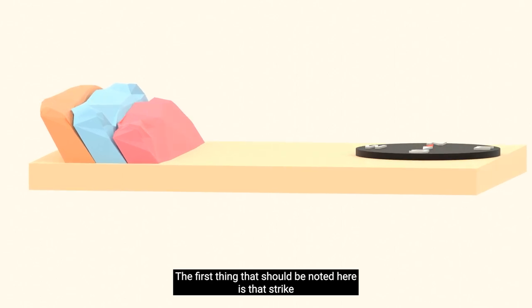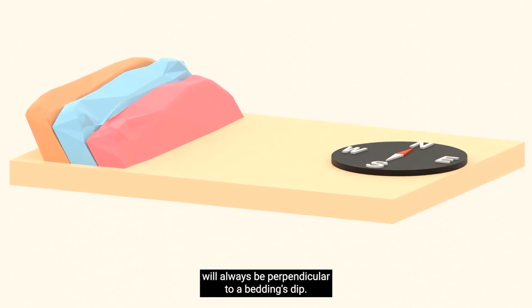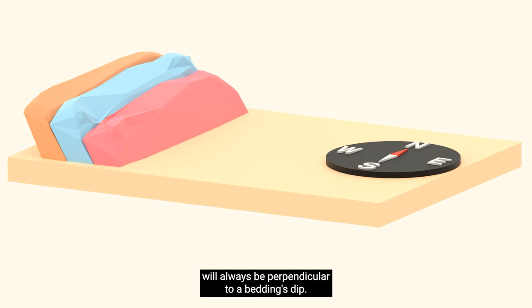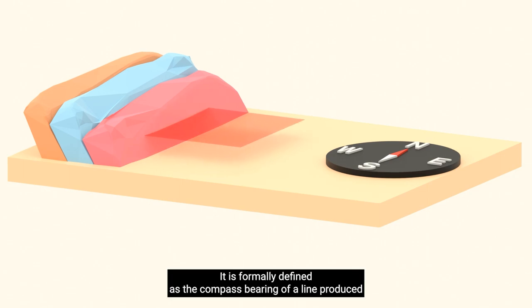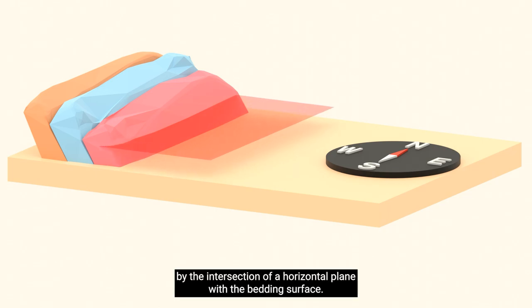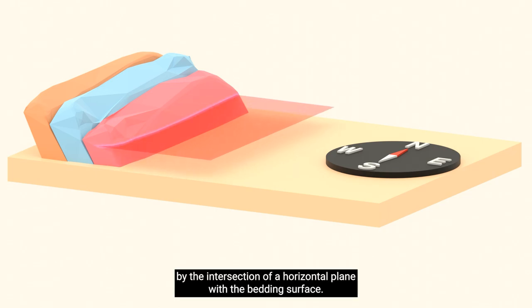It is formally defined as the compass bearing of a line produced by the intersection of a horizontal plane with the bedding surface. If this definition doesn't click right away, just remember that strike is a linear direction that sits perpendicular to the dip.